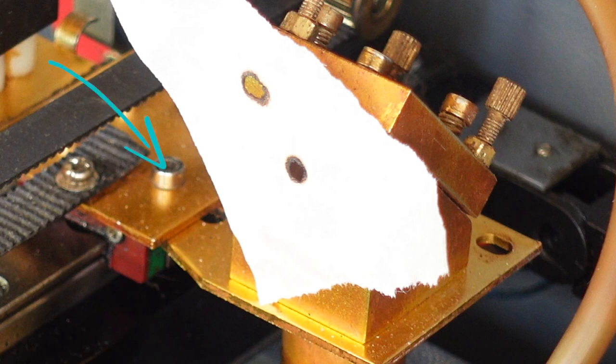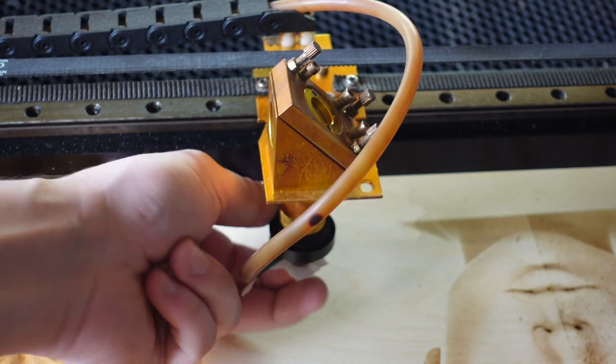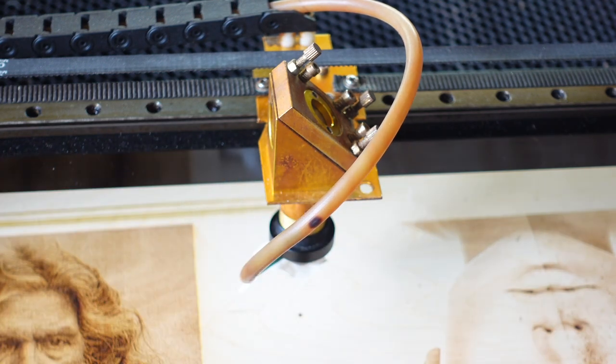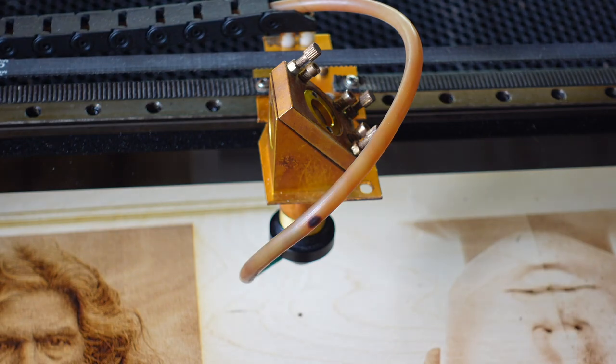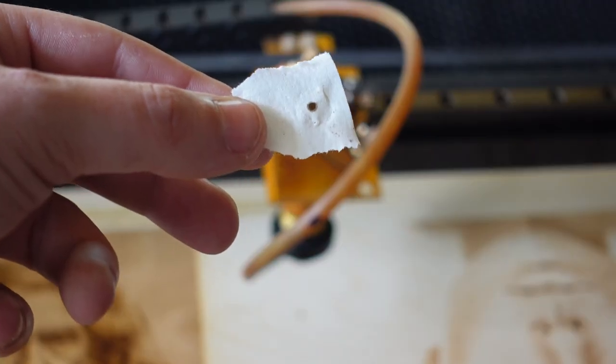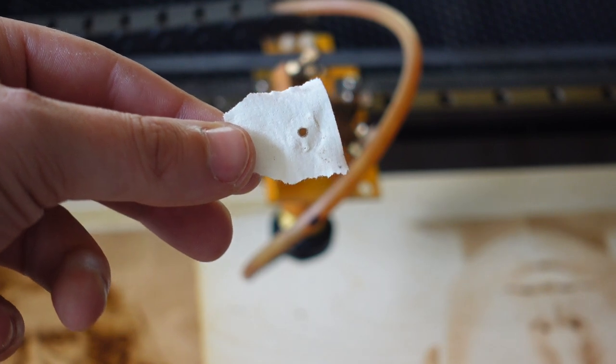Again, if it doesn't hit the middle of mirror three, use the long holes on mirror three to adjust that. Do not turn around on mirror two anymore, it's perfect. For the last mirror you can put duct tape on the nozzle and make sure to give it some pressure so it makes an imprint of the nozzle's hole. If you press pulse now you should see the marking in the middle of the nozzle imprint.